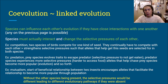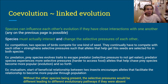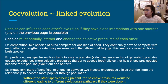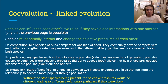In predation, the prey species evolves traits to escape the predator. The predator then evolves to become more efficient at chasing prey — they both chase each other evolutionarily. In mutualism, if two species interact and it benefits them initially, alleles that favor the relationship become more popular, and they both evolve together around that mutualistic relationship.